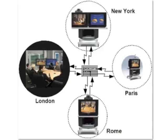Internet technologies — types of digital communications. There are many types of digital communications, such as video conferencing. A video conference uses a computer, camera, speakers, microphone, and a network such as the Internet, to conduct a live conference between two or more people.